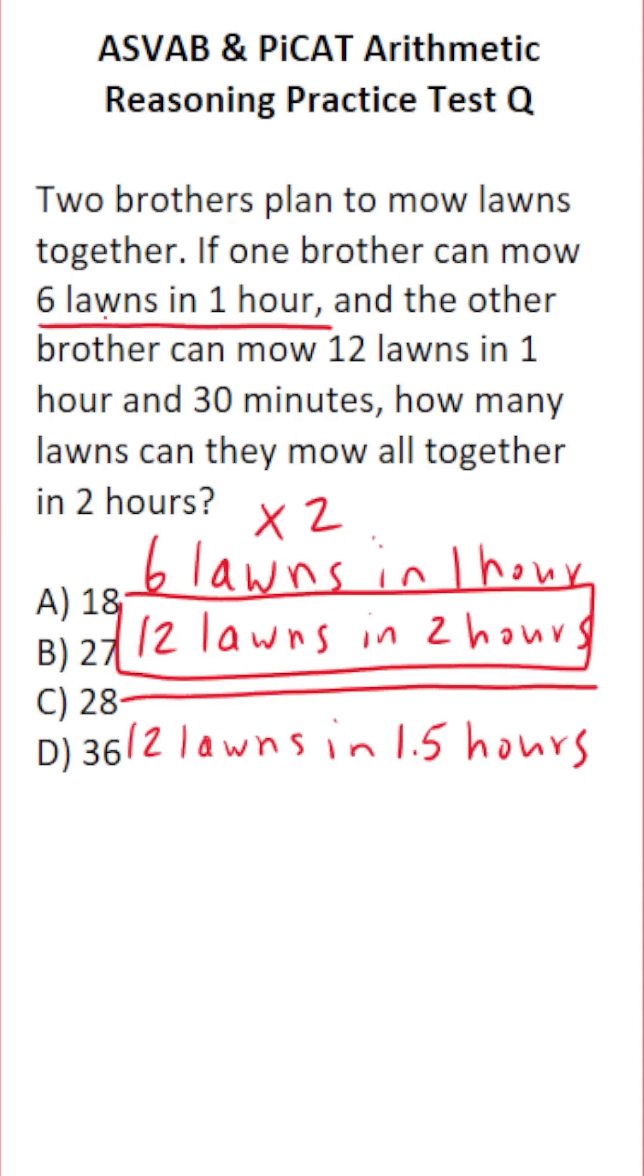All right, so to figure out how many lawns he can mow in two hours, we're first going to figure out how many lawns he can mow in one hour. And to do that, we're going to do 12 divided by 1.5.